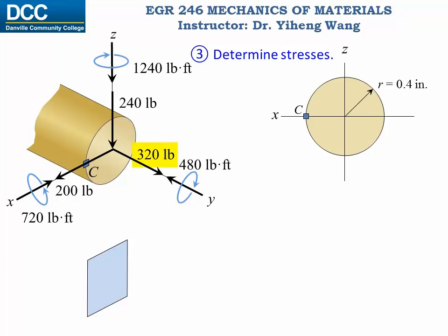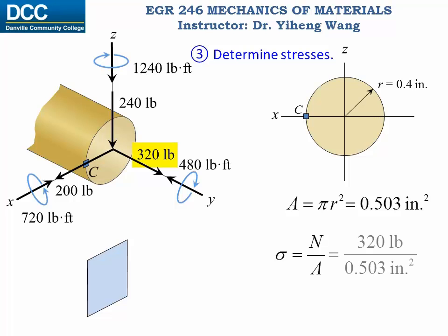We start with the normal force, which is a tensile 320 pounds. The normal stress is determined by this equation, with A being the cross sectional area of the circular cross section, determined by pi times r squared. Substituting in, we can determine the normal stress caused by the normal force, and it is the same everywhere on this cross section.